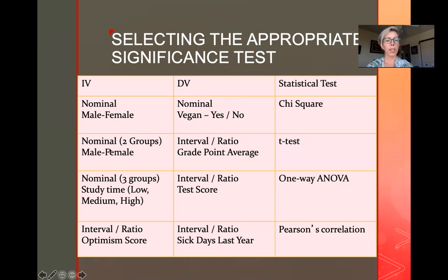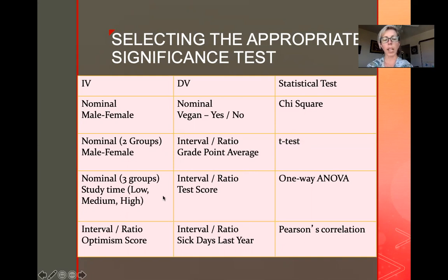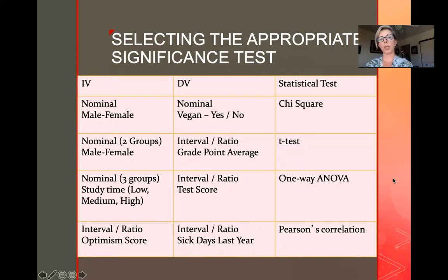The next combination is male/female compared against grade point average, which is usually considered interval or ratio — and that would be done with a t-test. If you have more than two groups, like low, medium, or high study time compared to test score, that would require a one-way ANOVA. And lastly, if you have two interval or ratio variables — like an optimism score versus sick days taken last year — that would be a Pearson's correlation.